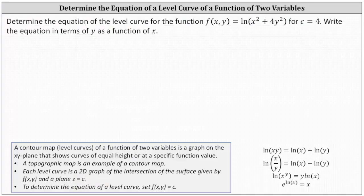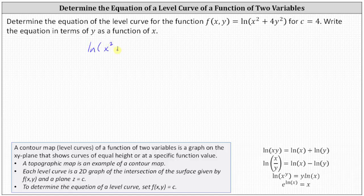To do this, we set f(x, y) equal to c, which gives us the equation: ln(x² + 4y²) = 4.